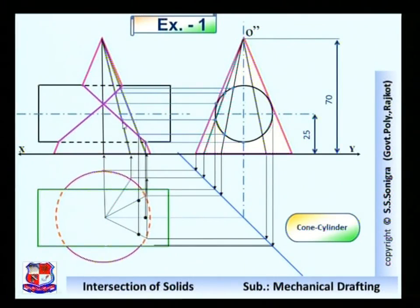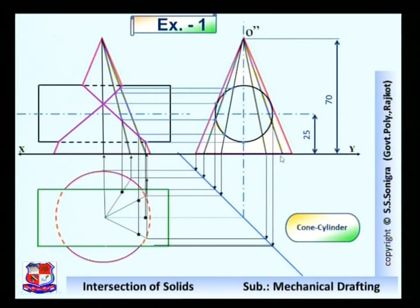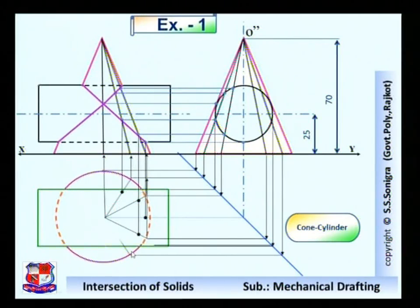Similarly, from this point draw a straight vertical line. It will cut the generator at one point over here and another point over here. This is an imaginary generator to find out the position of this point. For that, draw a vertical line from this generator to the meter line, then draw a horizontal line and that generator, and from this point draw a straight vertical line. It will cut the circle and this generator at this point.